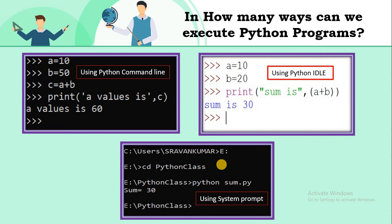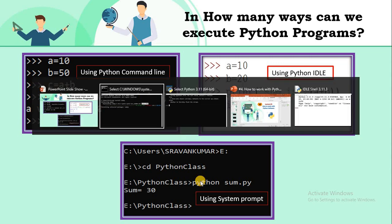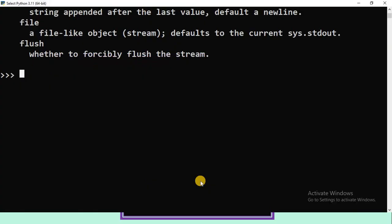If you want to execute Python programs, we have three ways. The first is using the Python command line environment, the second is using Python IDLE, and the third is using the system prompt. Let us see how to execute the program using the Python command line.